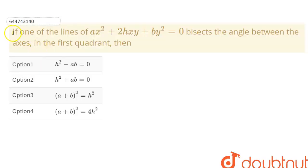Hello student, in this question we are given if one of the lines of ax² + 2hxy + by² = 0 bisects the angle between the axes in the first quadrant, then we have to decide which options are correct.